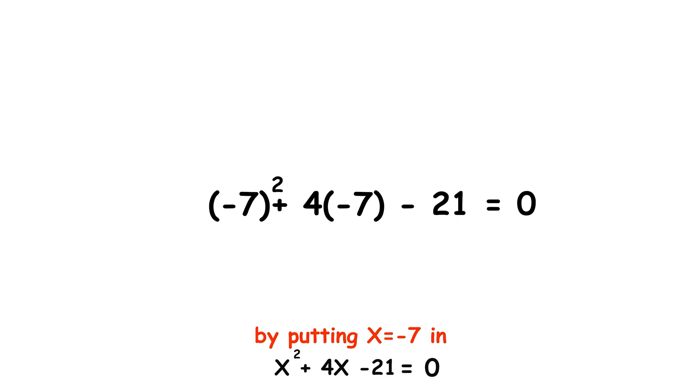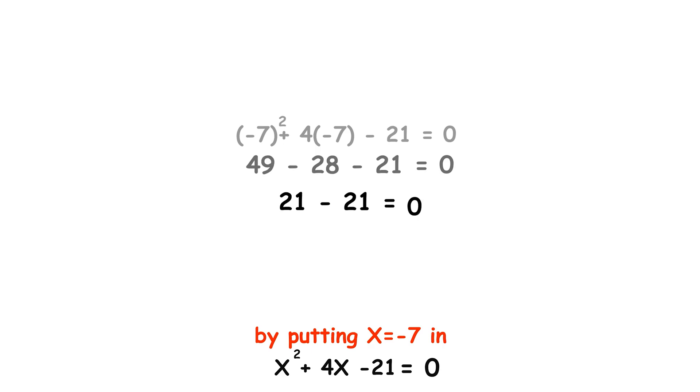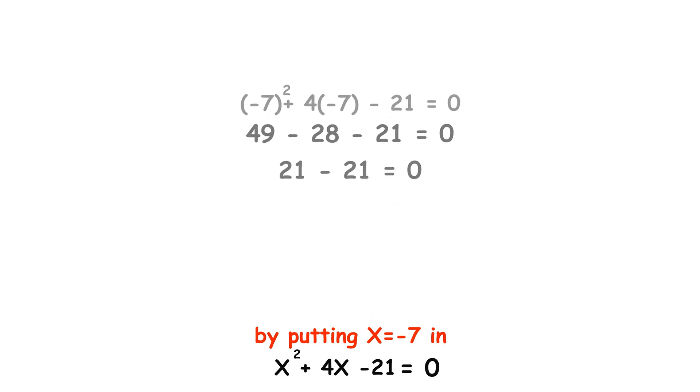Now, x equals negative 7. Negative 7 squared plus 4 times negative 7 minus 21 equals 0. 49 minus 28 minus 21 equals 0. 21 minus 21 equals 0. 0 equals 0. So, our solutions are correct.